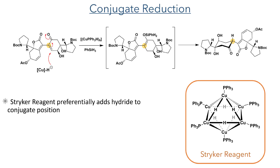The next step was conjugate reduction. In order to selectively reduce the alpha-beta unsaturated double bond, the authors employed Stryker's reagent to perform the desired transformation. This reagent preferentially adds a hydride in a conjugate fashion and did not react with the less electrophilic gamma conjugate position of the other ring. The reaction produced the desired enantiomer with less than 5% of its epimer observed.